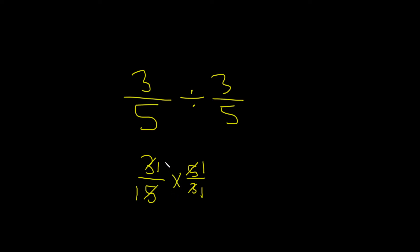And now we can just multiply straight across. So 1 times 1 is equal to 1, 1 times 1 is equal to 1. So we have 1 over 1, which is just equal to 1.